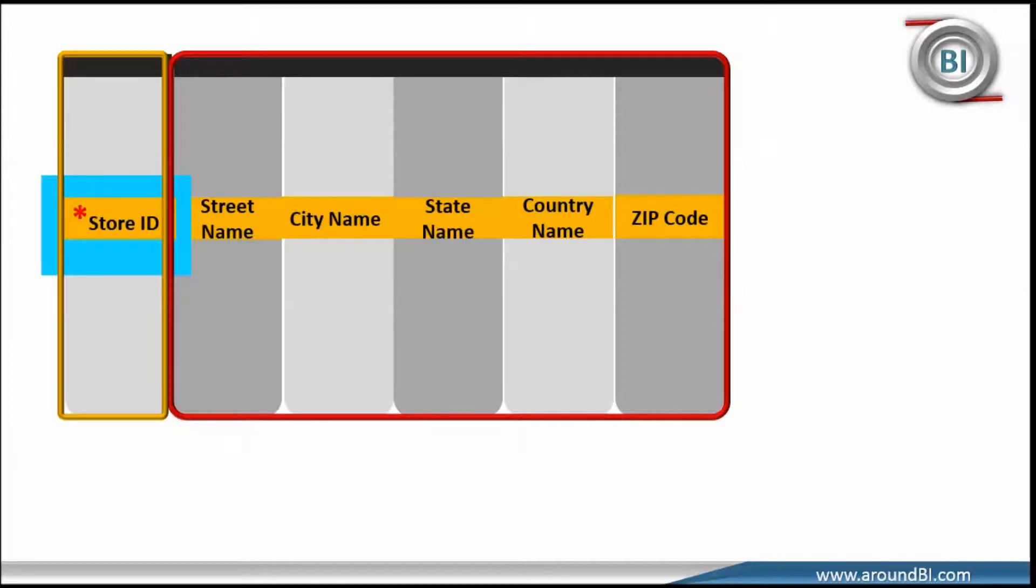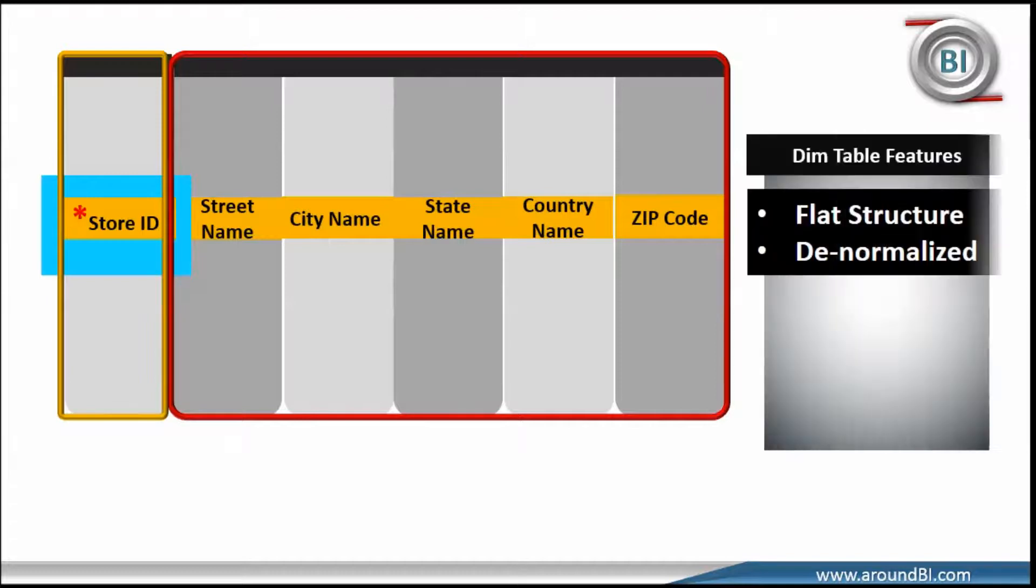With this schema, a common table property can be noticed here that dimension table is flat and denormalized. These structures are mainly built to enable users to analyze data easily.